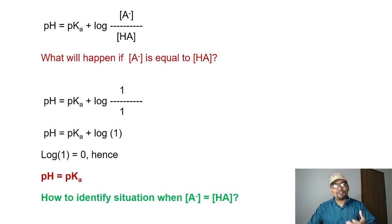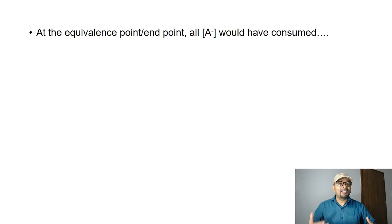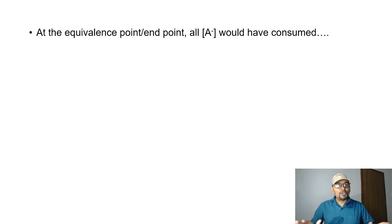How can one identify the situation where A⁻ equals HA? If you can identify this, you have the pKa value. This is simply an acid-base titration. We are going to conduct a simple acid-base titration. The end point or equivalence point is when the entire HA is consumed by the base — when all A⁻ has been consumed by the base. This is the key importance of conducting the acid-base titration.